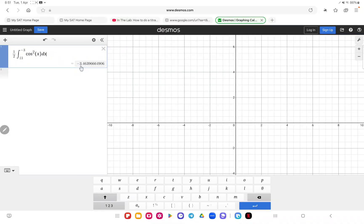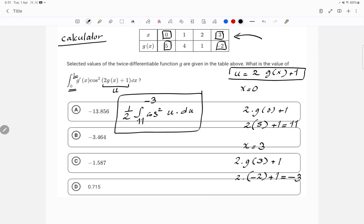Now we have our value, which is negative 3.463. So that would be choice B.